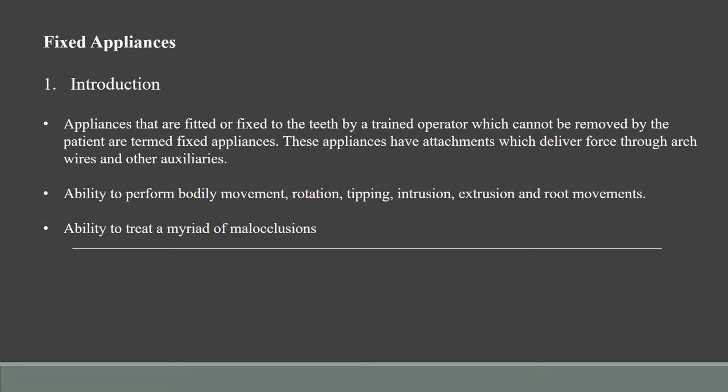So what are fixed appliances? These are certain attachments which are fitted or fixed to the teeth by a trained operator, which cannot be removed by the patient and are manipulated by the operator. These appliances have specific attachments which deliver force through arch wires and other auxiliaries. One of the main components are brackets, and other components such as elastics, bands, molar tubes and ligatures are all used which help secure the arch wires to the brackets and the molar bands.